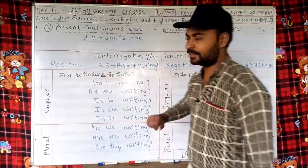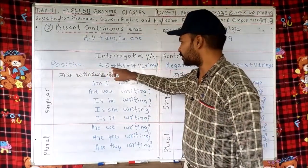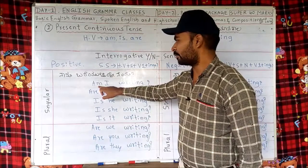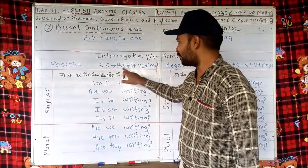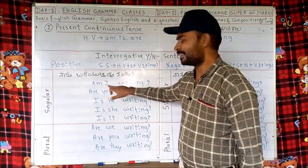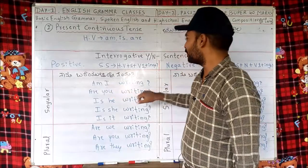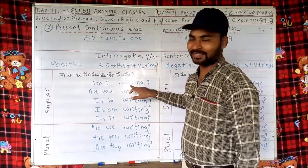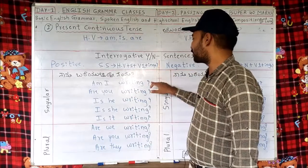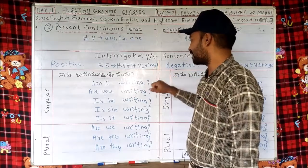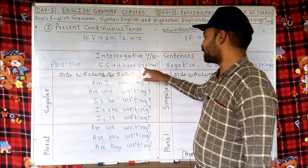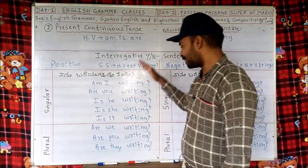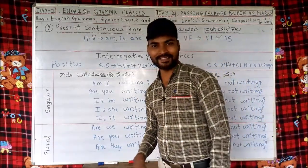Interrogative yes or no type — positive sentences. Sentence structure: helping verb at the beginning of the sentence itself, then subject, then V1 plus ING. We should not forget to put a question mark. So: helping verb, subject, V1 plus ING, question mark — this is the structure of this tense.